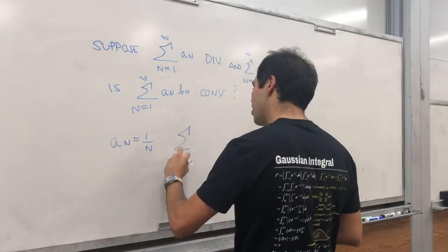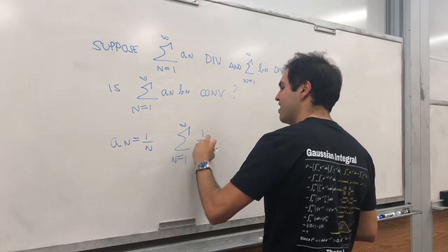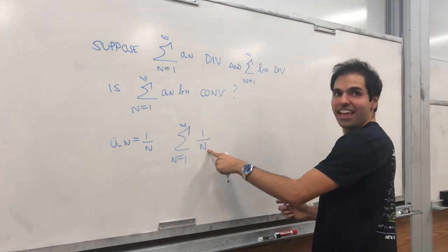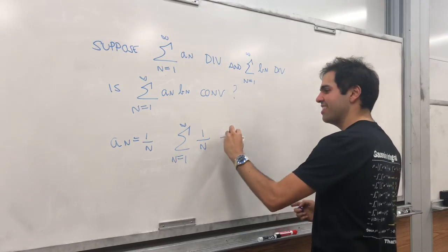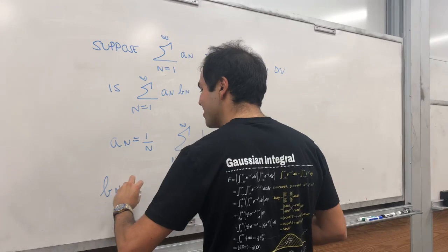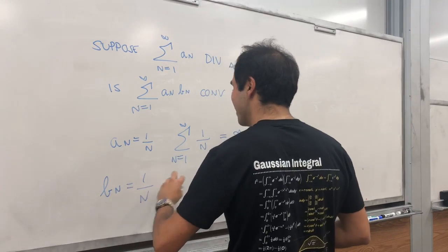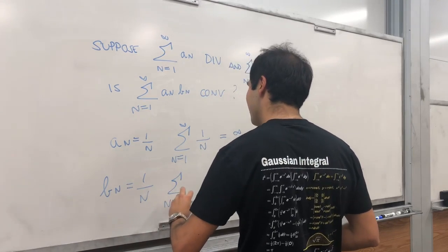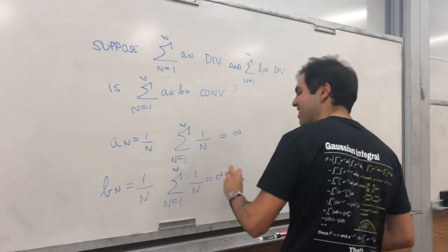Then the sum from 1 to infinity of 1 over n. Well, that's the one test. It's a one series. So it diverges. Now let b_n. Well, what other examples do we have? Well, the same thing.